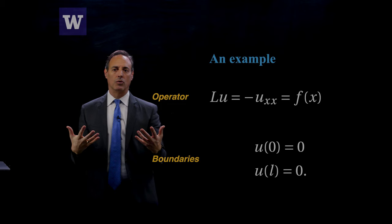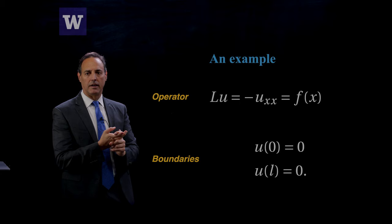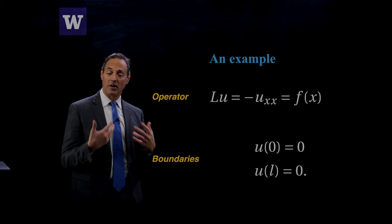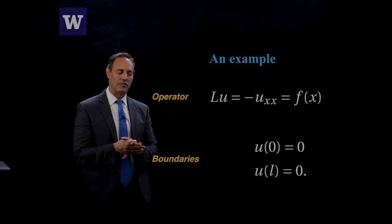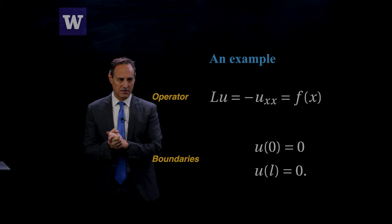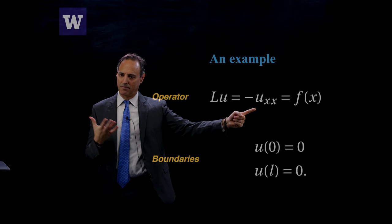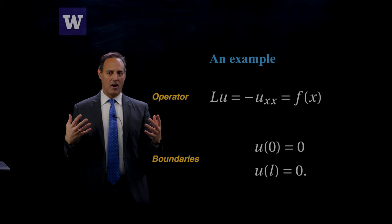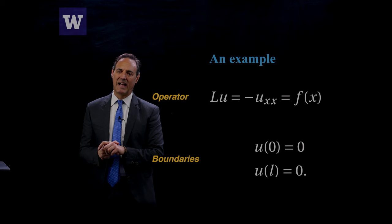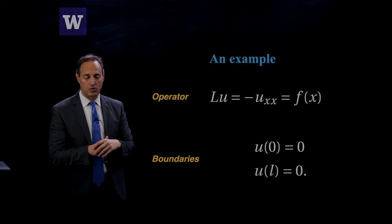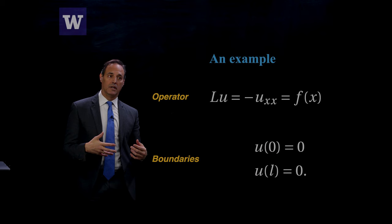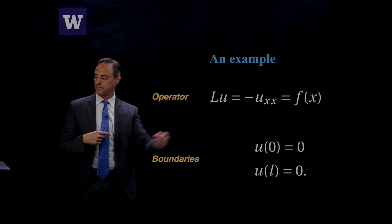The whole game in eigenfunction expansions relies on inner products and orthogonality. Of course, I'm doing self-adjoint operators here, which makes it all very easy. When you have non-self-adjoint operators or operators without the nice properties of Hermitian operators, things get more interesting. Let's do an example. Consider the operator LU equals minus U_xx, so it's a second-order operator, equals F of x, with boundary conditions U of 0 equals 0 and U of L equals 0. These are very simple pinned boundary conditions. The solution is 0 at 0 and L, and it's a second-order differential equation in between.